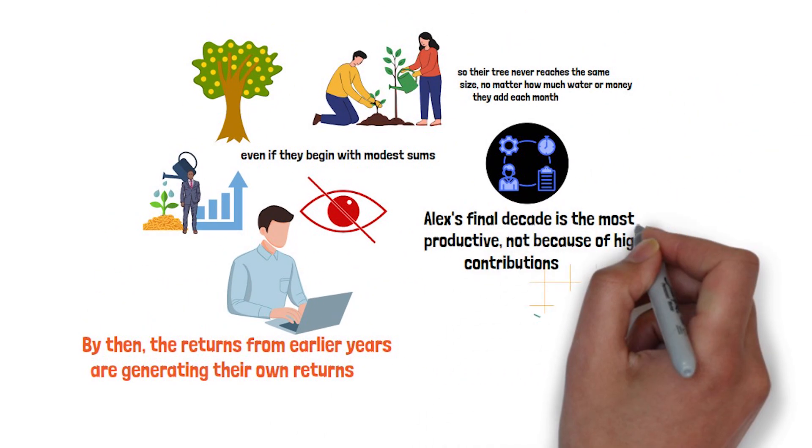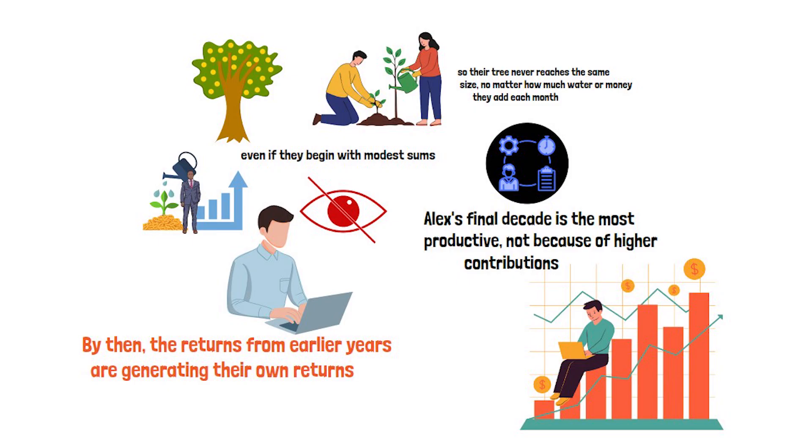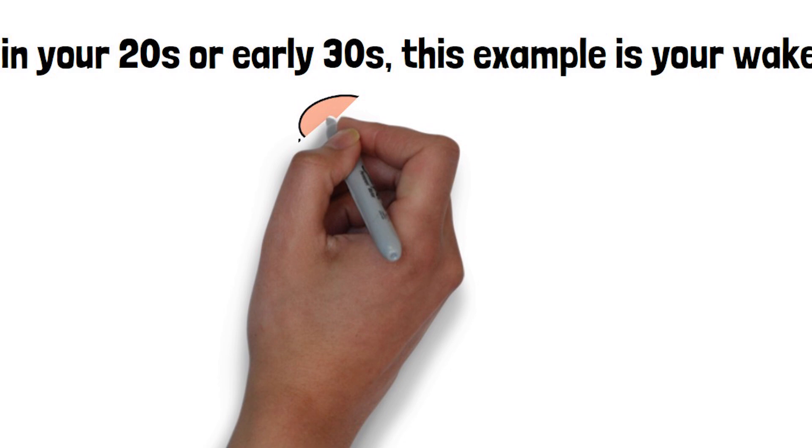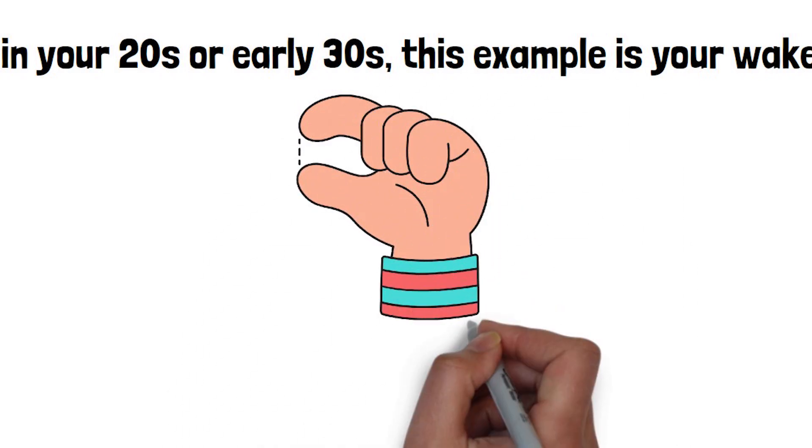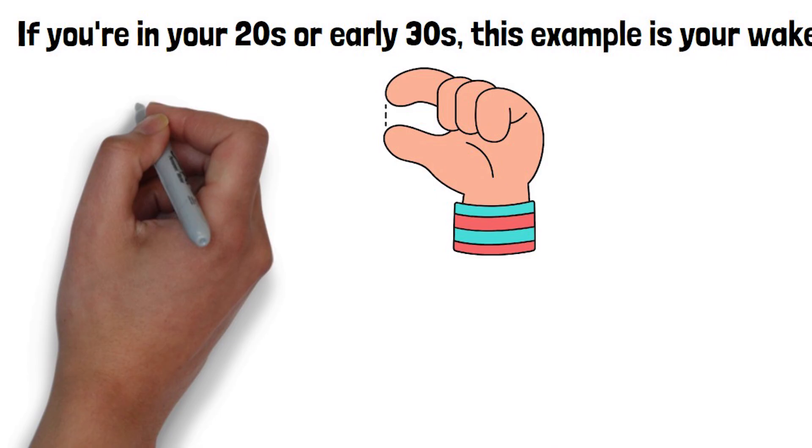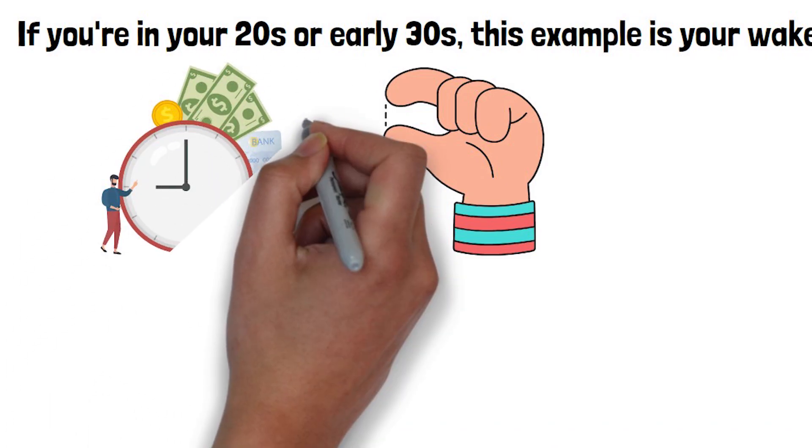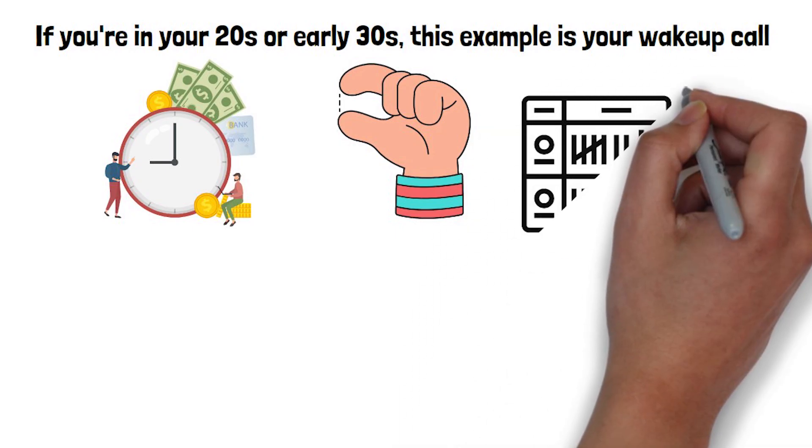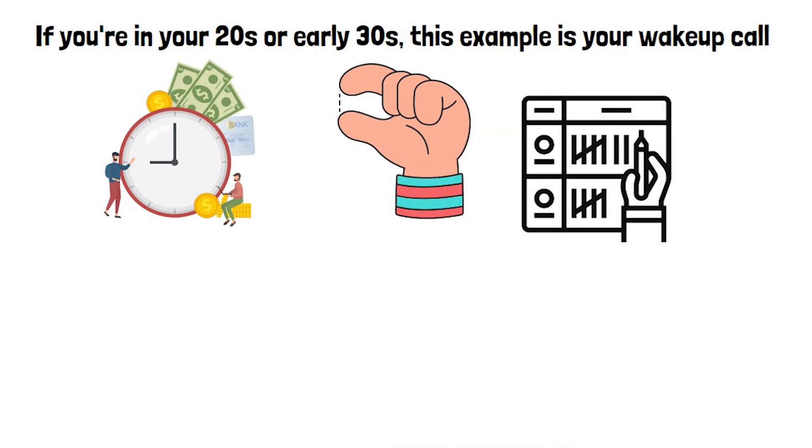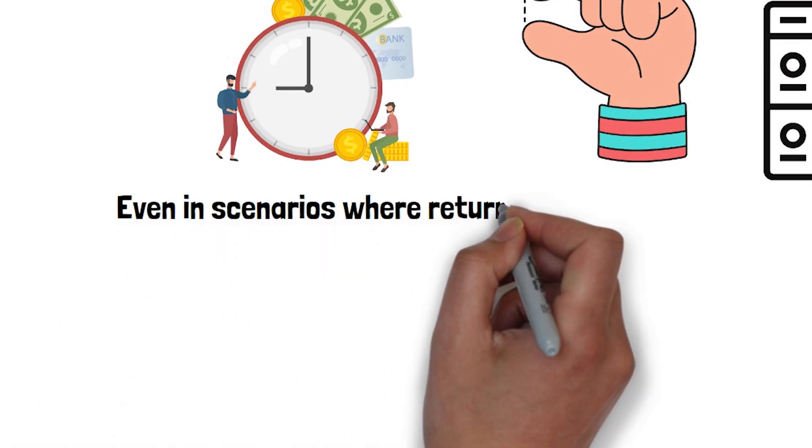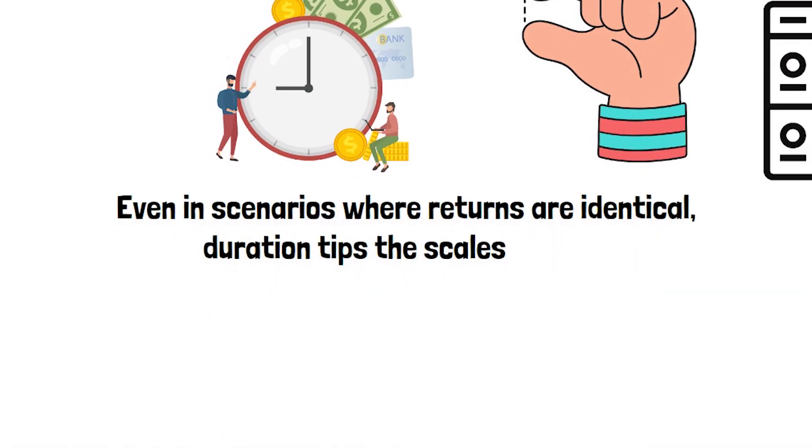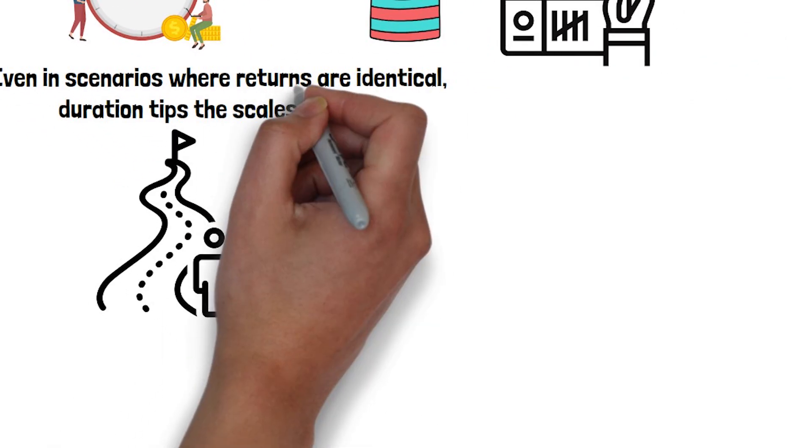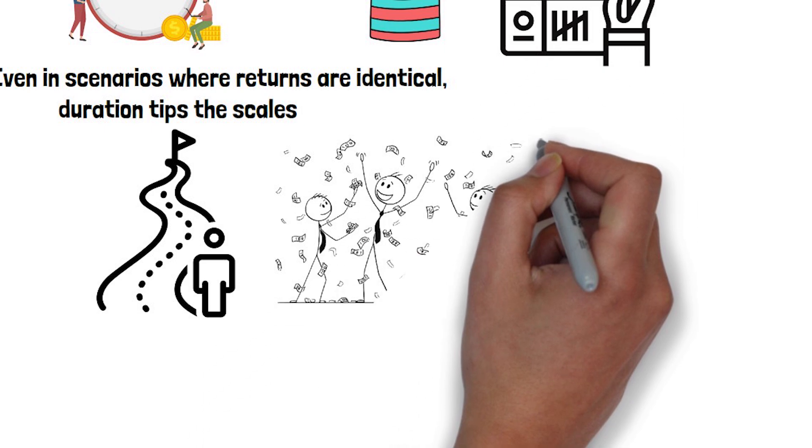Creating a multiplier effect that later starters simply can't replicate. If you're in your 20s or early 30s, this example is your wake-up call. Small, steady amounts started now can beat much larger contributions made later. Time can be more valuable than money, because it cannot be added back once it's gone. This also explains why time in the market is often called an investor's most valuable asset. Even in scenarios where returns are identical, duration tips the scales. Waiting to start is far more expensive than it looks. Those lost doubling cycles can cost hundreds of thousands of dollars over a lifetime.